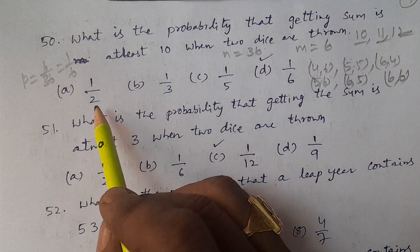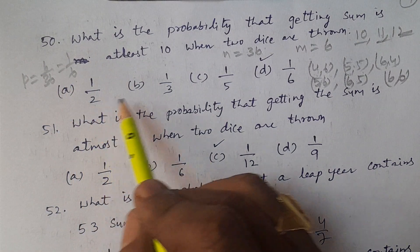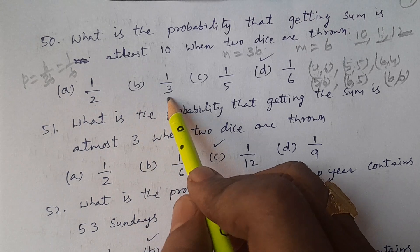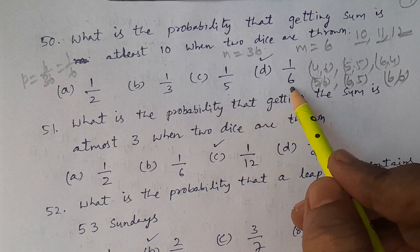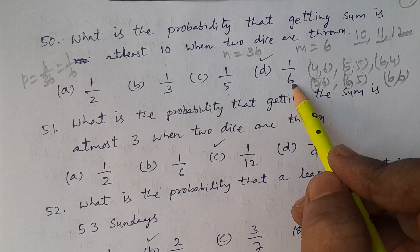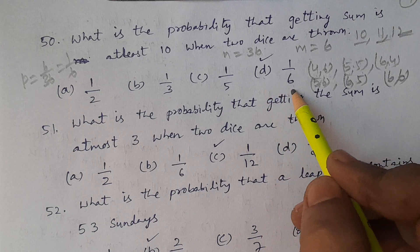Looking at the options: 1/2, 1/3, 1/5, and 1/6. The answer is option D, which is 1/6.